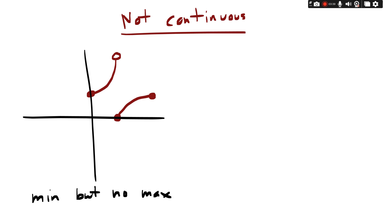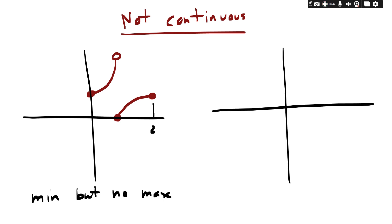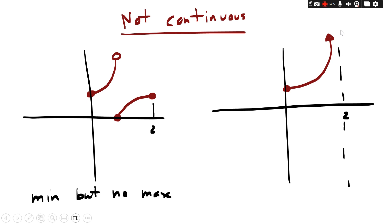Your job: can you draw a graph that ends at two and has a vertical asymptote at two — a graph that has a minimum but no maximum? This also happens on graphs that go off to infinity. The reason it violates the Extreme Value Theorem is there's no closed interval — this thing goes on forever.